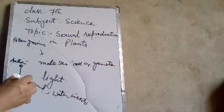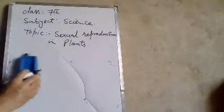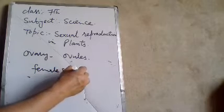The ovary continues into a long style and ends in a knob-like part called the stigma. The ovary contains many ovules.